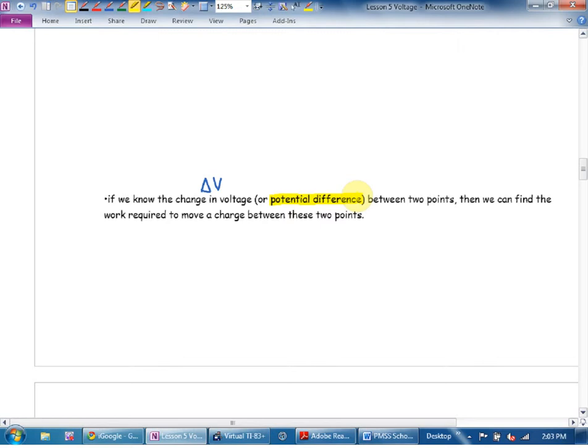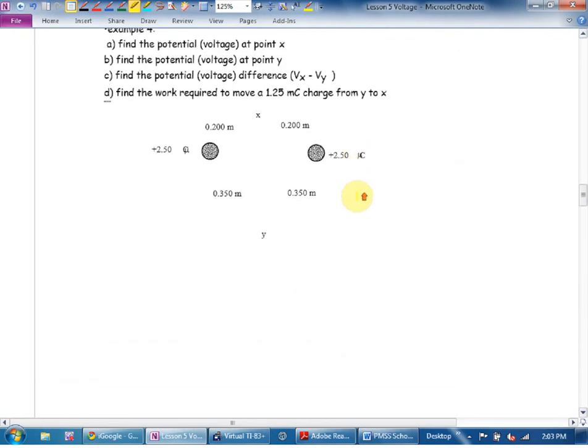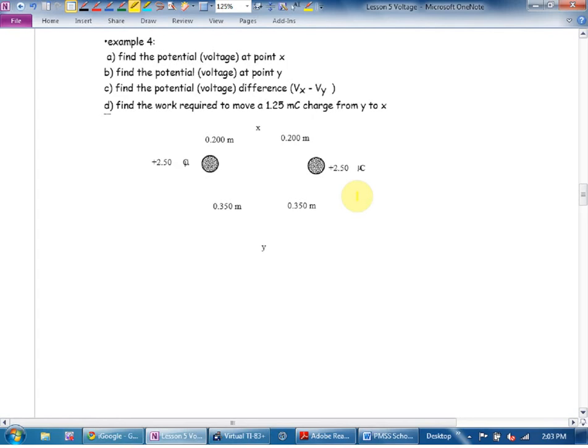Then we can find the work required to move a charge between these two points. It says, find the potential at point x. How many charges are there in this picture? Two. So once again, Leslie, I'm going to use the principle of superposition. If they want me to find the voltage right there, I'm going to temporarily ignore that one and just find the voltage from this guy.